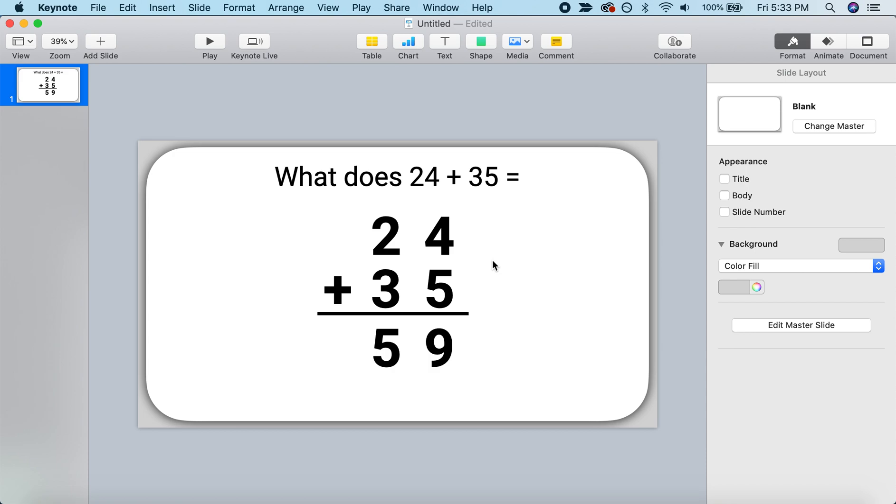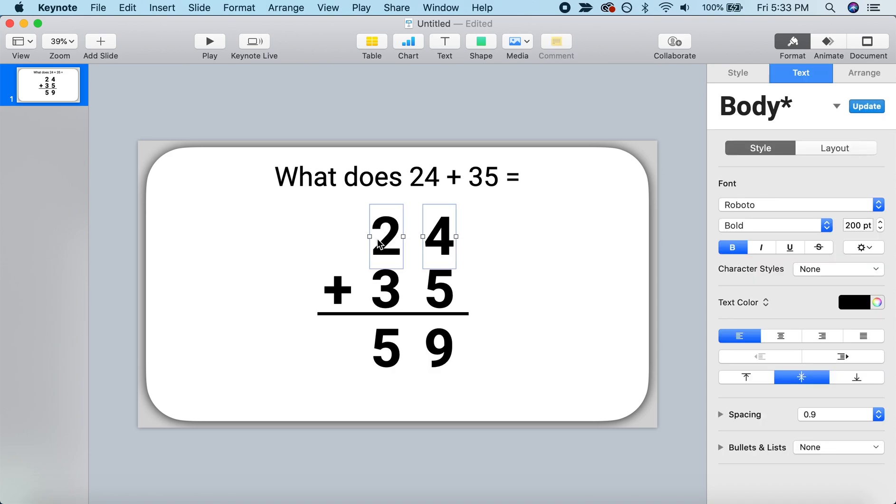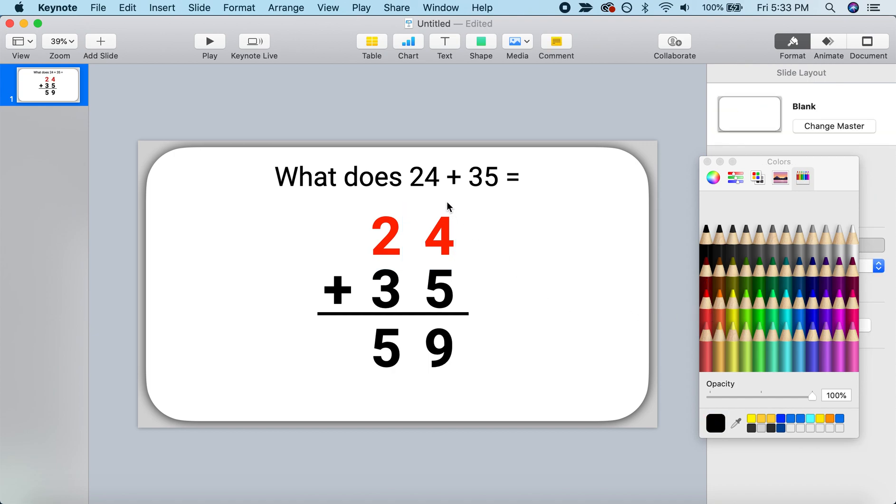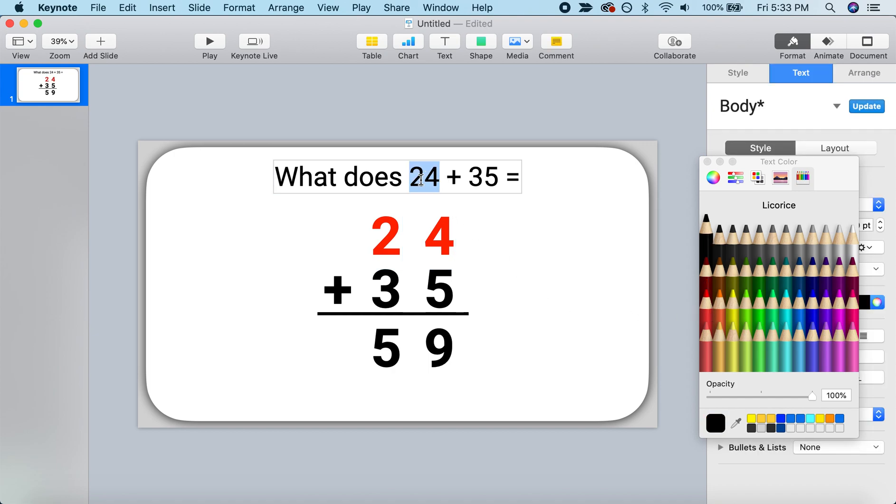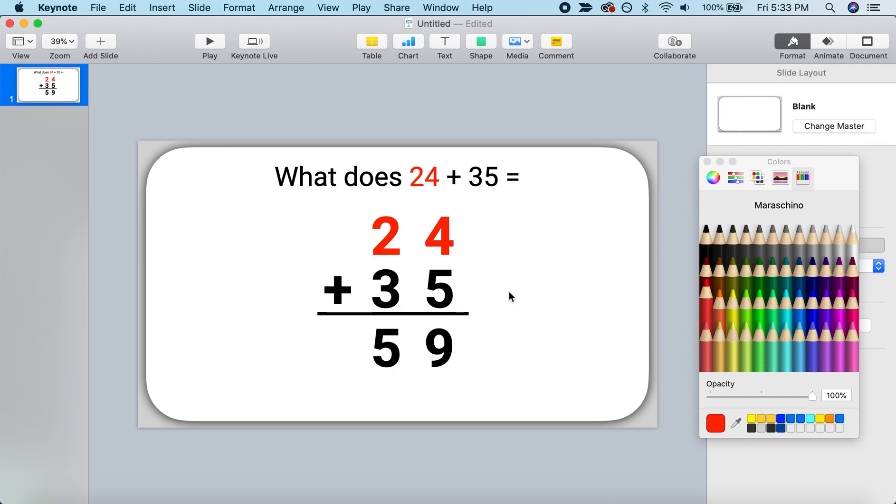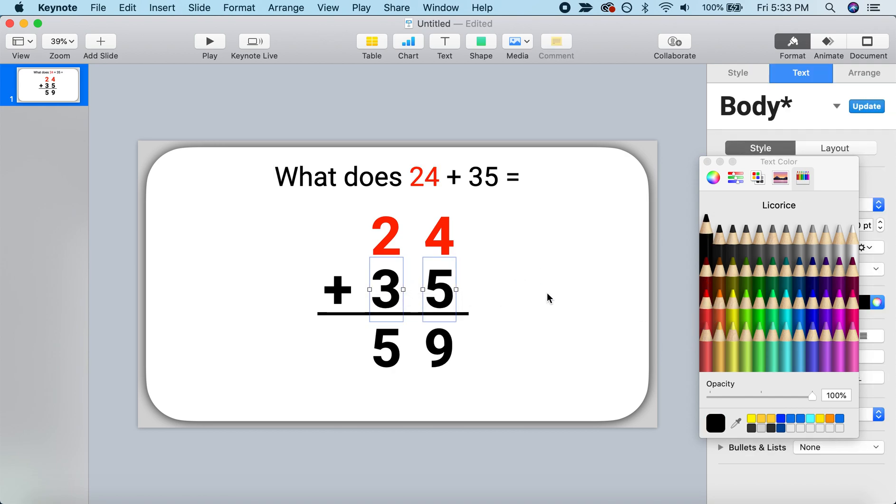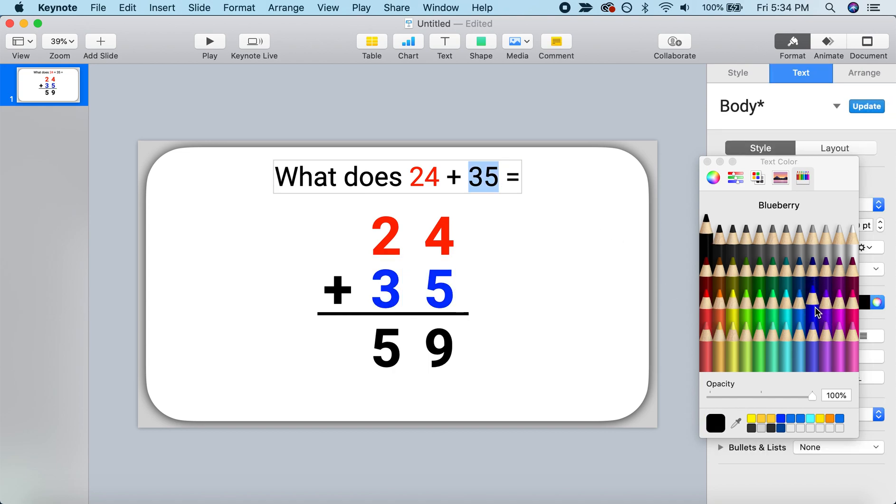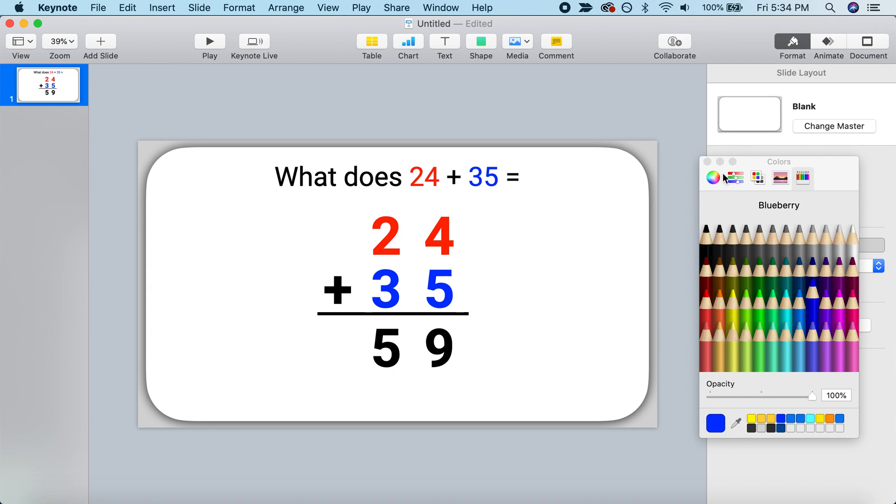But one thing, we might decide, hey, let's use colors to make this a little bit clearer. So what if we make the number 24? Let's change those text colors. So under the text tab, let's change the color. Let's make that red. And you know, we can do that in our initial problem. We'll just highlight 24 and make it red. We can do the same thing with 35. Let's turn it a different color. Let's do blue. And we'll highlight the 35, make it blue.